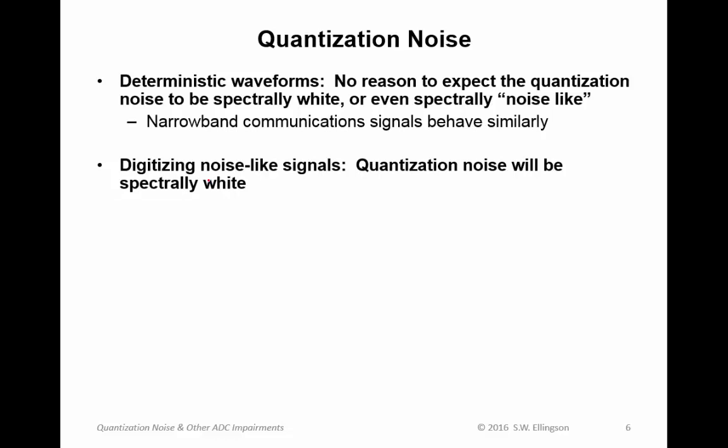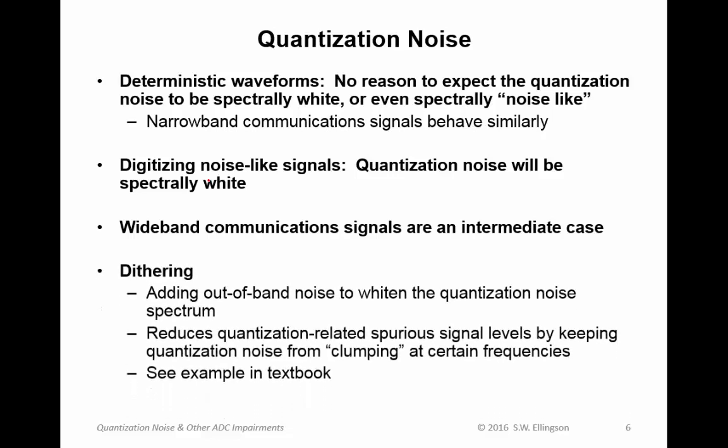Now on the other hand, if we digitize noise-like signals, signals which have spectrum perhaps which looks like noise, then the quantization would be spectrally white. Most communications in the modern era are an intermediate case. They're perhaps not well represented as sinusoids, perhaps not well represented as being broadband noise. They're somewhere in the middle. So the quantization noise spectrum is a little bit hard to anticipate. Dithering is a scheme which is used to level out the spectrum of the quantization noise. And this entails adding out-of-band noise to whiten the quantization noise spectrum.